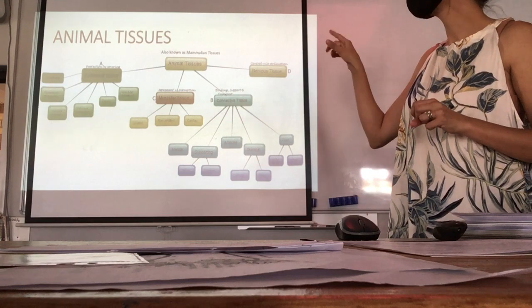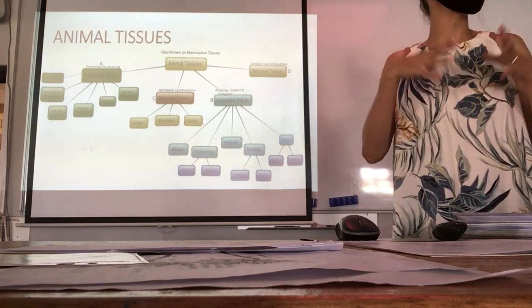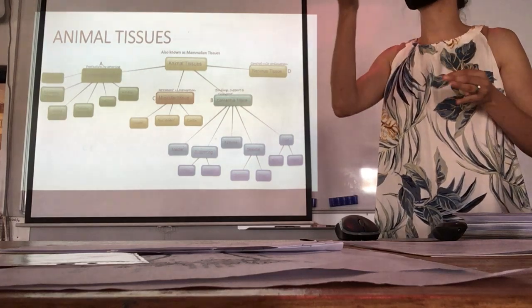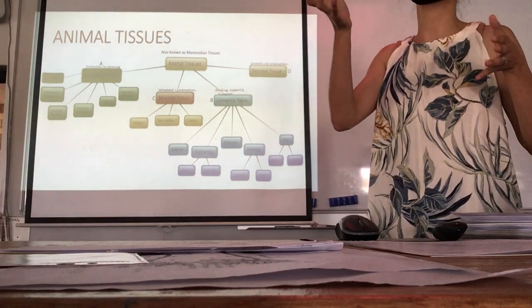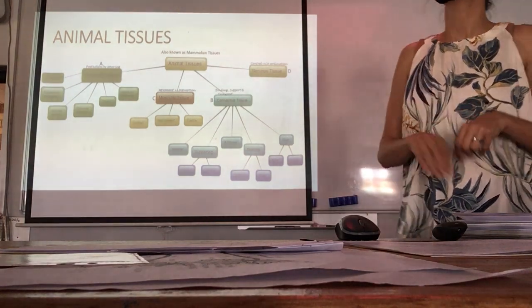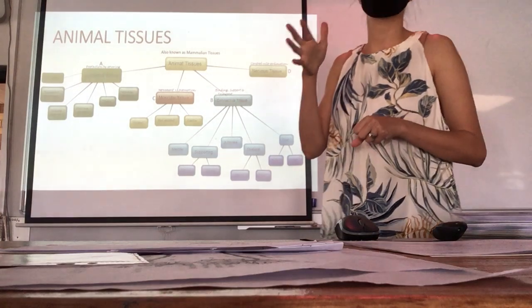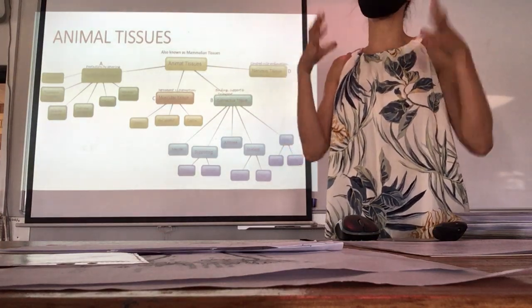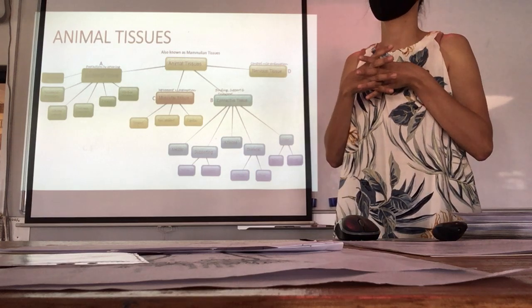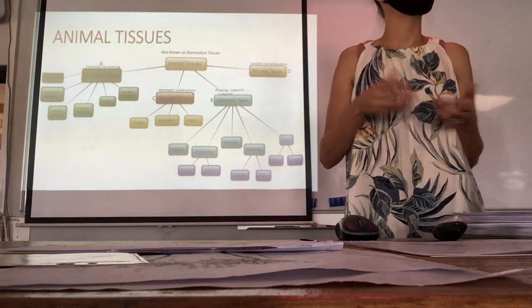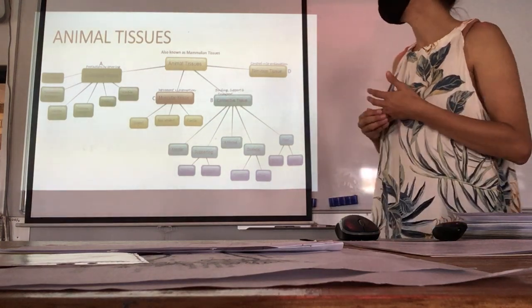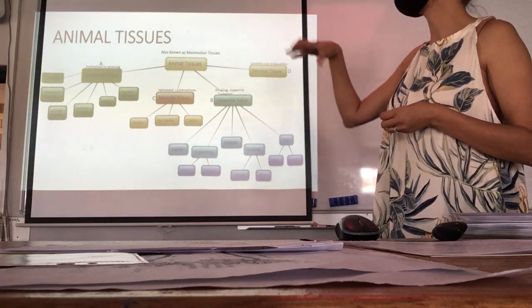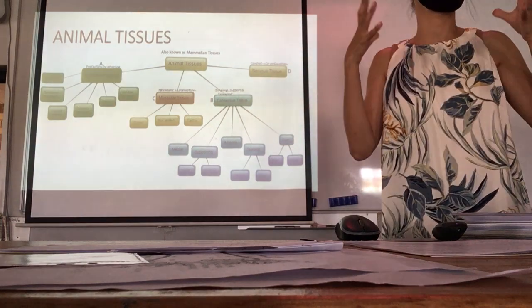Within those columnar cells, we can also have goblet cells that produce mucus. It doesn't necessarily only have to be goblet cells — there could be glands as well. That's glandular secretory, but it still falls within columnar tissue.